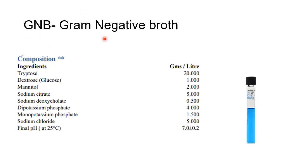Next is GN Broth, which stands for Gram Negative Broth. Composition includes tryptose, dextrose, mannitol, sodium citrate, sodium deoxycholate, dipotassium phosphate, monopotassium phosphate, and sodium chloride, at pH 7.0. This media was developed to enrich and recover Salmonella and Shigella from clinical and non-clinical samples. Tryptose provides amino acids and nitrogenous substances supporting bacterial growth. The combination of sodium citrate and sodium deoxycholate inhibits gram-positive bacteria and some gram-negative bacteria such as coliforms.